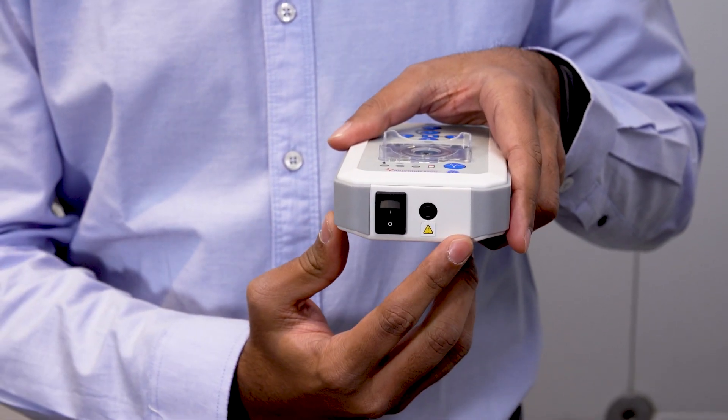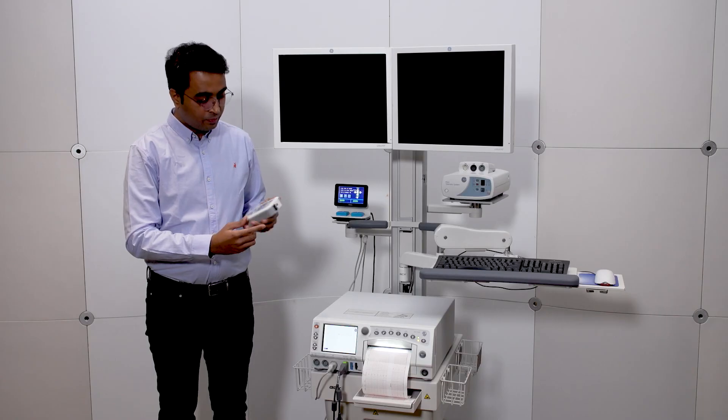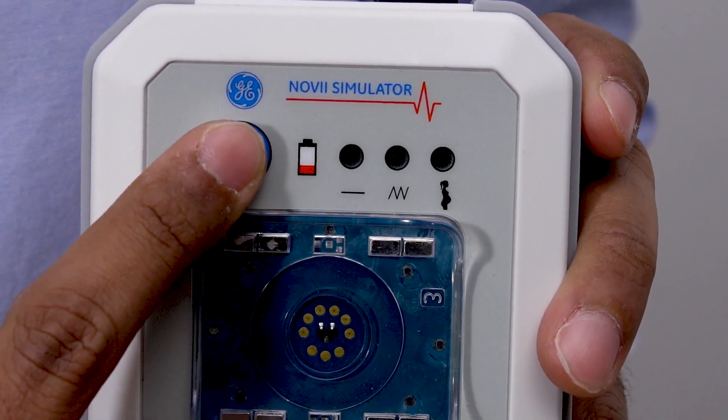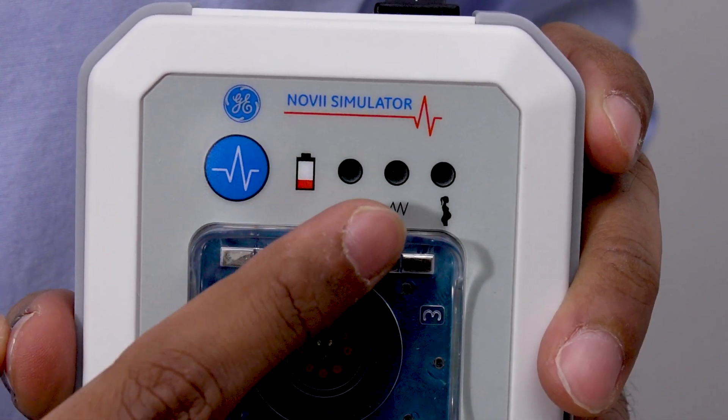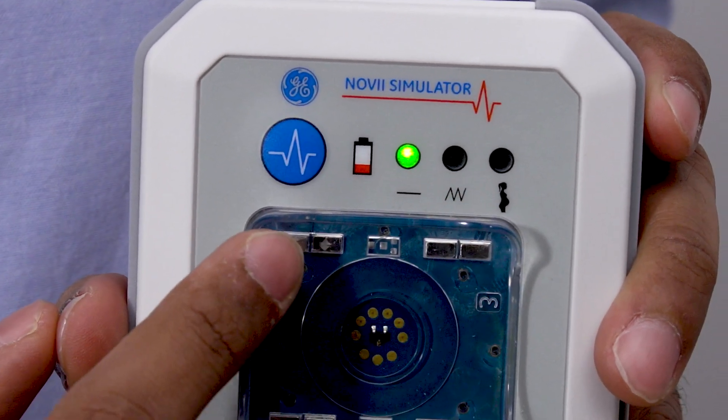Also, it contains an audio jack, which is for authorized personnel only. The front of the simulator has a blue mode selection button. Pressing this button will select a mode setting. You can choose between Constant, Pattern, and Demo mode. Each mode is indicated with a light. Let's see that again.